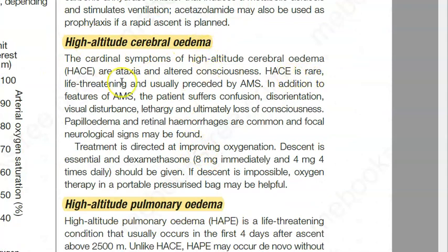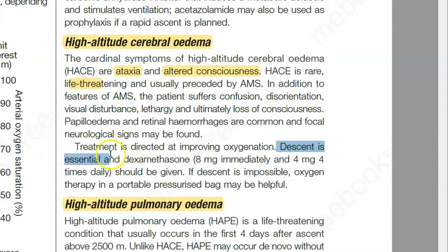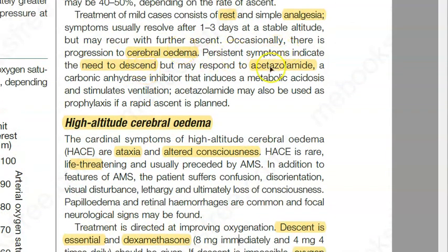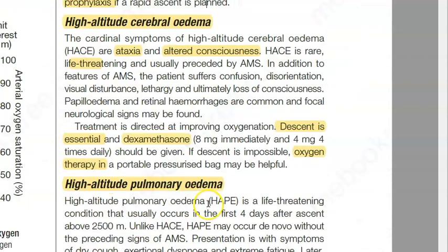For cerebral edema, there can be ataxia and altered consciousness — this is life-threatening. For cerebral edema, the treatment is descent, which is very important. If you can't descend, give oxygen to improve oxygenation. You can give acetazolamide as prophylaxis if somebody is planning to ascend rapidly. For example, if someone says they are climbing a mountain, at least ask them to take acetazolamide before going.